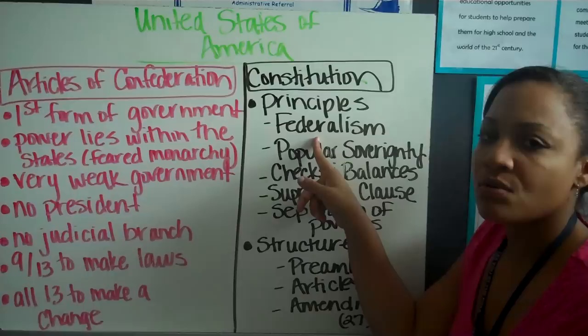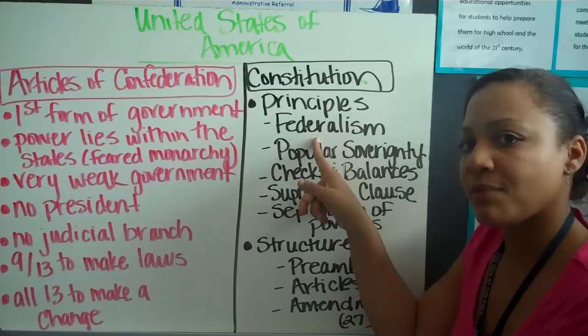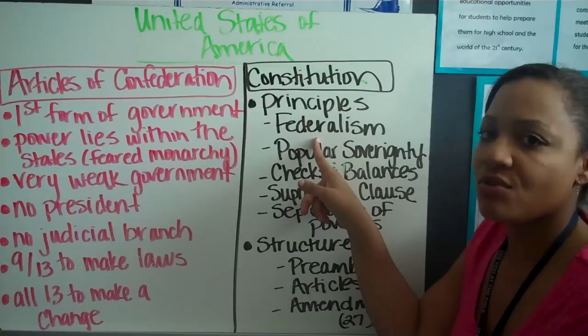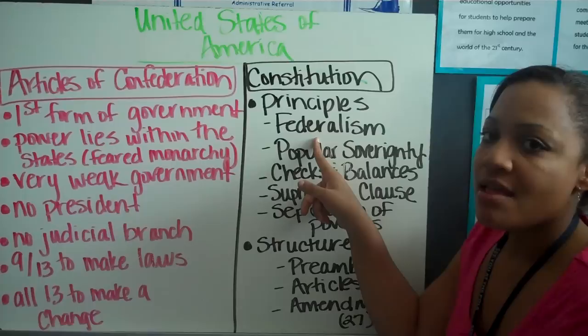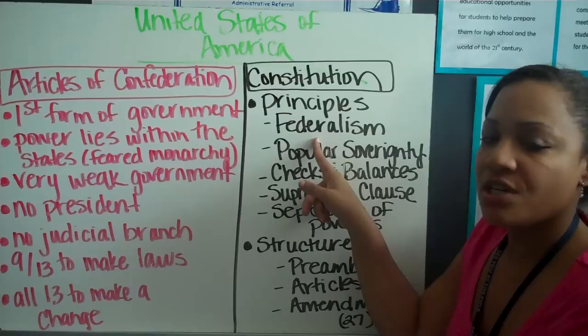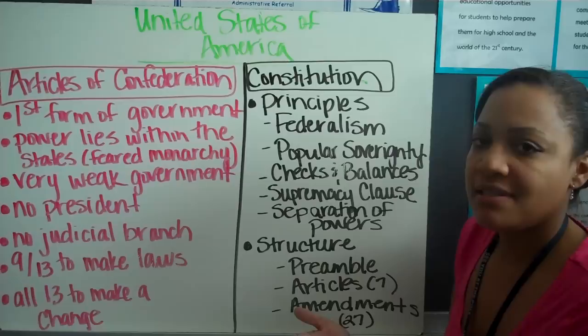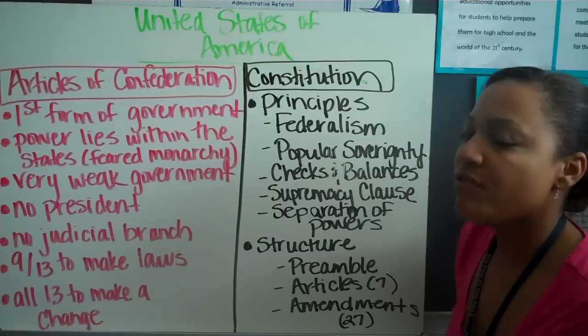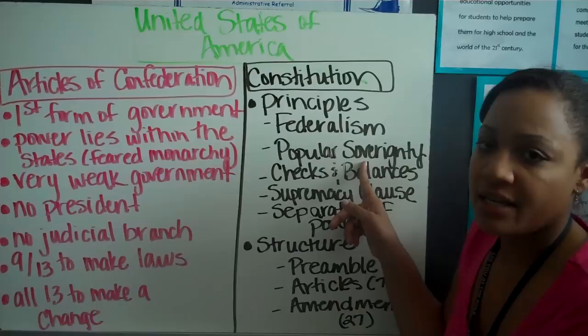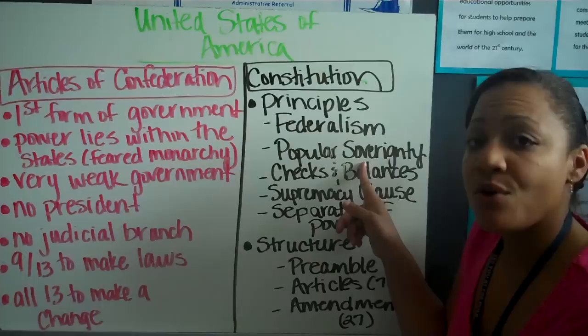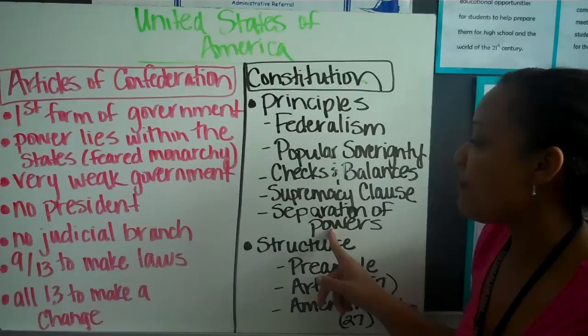Looking at the Constitution, it has certain principles. Federalism means powers are shared between federal and state government — for example, you pay both state and federal taxes. Education is a power given only to states: the federal government doesn't make educational laws for each state, which is why North Carolina used to have civics in 10th grade while Virginia had it in 12th grade. Popular sovereignty means the power lies within the people — it is the consent of the governed — and we exercise this power by voting for our leaders.